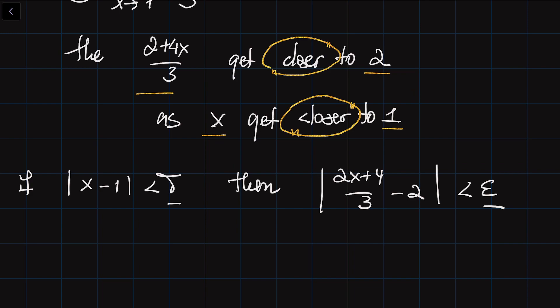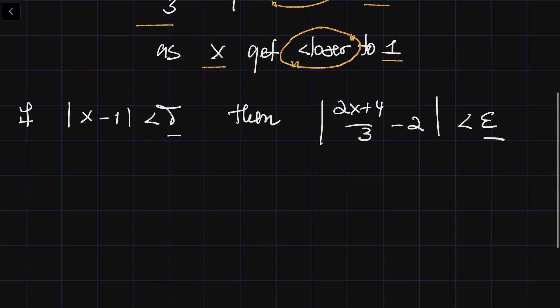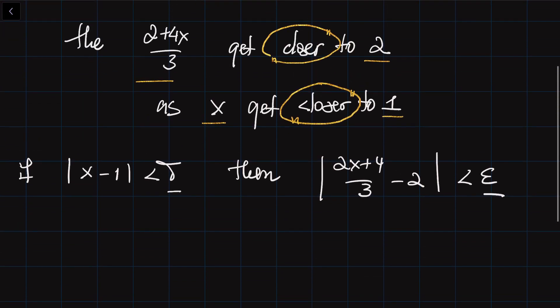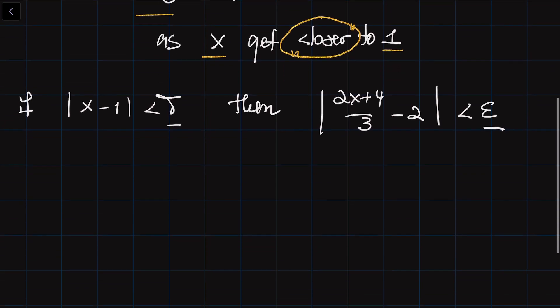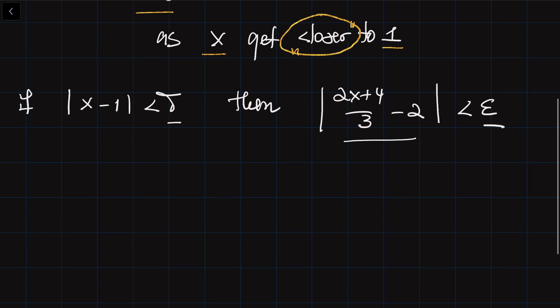If it is possible to do this, then the limit exists and the limit is equal to 2. We usually use the precise definition of the limit in order to prove that a limit exists or to prove that it doesn't exist. In this example, we are going to prove the limit exists. I'm going to simplify this expression and write it like |(2x+4)/3 - 2|.